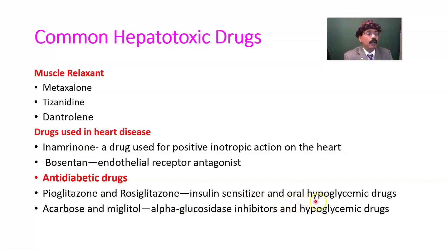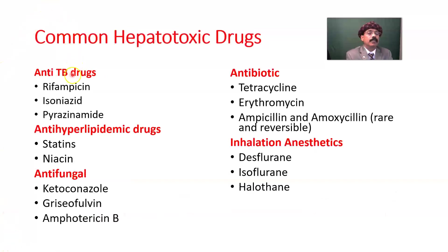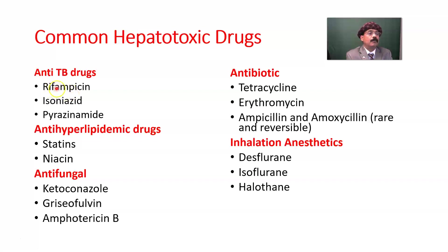Anti-diabetic drugs like pioglitazone and rosiglitazone are insulin sensitizers. Oral hypoglycemic drugs acarbose and miglitol are alpha-glucosidase inhibitors. All of them may lead to liver toxicity in a certain percentage of the population. Anti-TB drugs like rifampicin, isoniazid (also called INH, isonicotinic acid hydrazide), and pyrazinamide are all potentially hepatotoxic. Rifampicin induces hepatic enzymes, so it may interact with other drugs and also damage the liver that way.